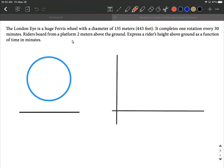Riders board this from a platform that's two meters above the ground, then they go up and they come back down. What we want to do is we want to express the rider's height above the ground as a function of time in minutes. So let's just kind of label everything to get started.